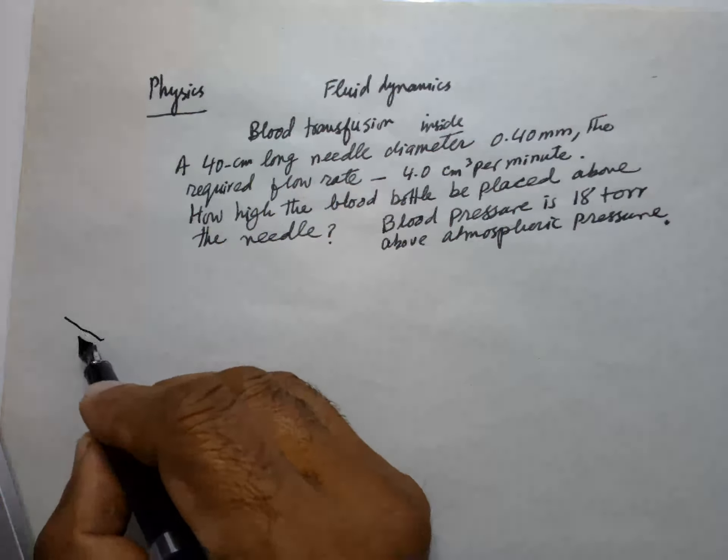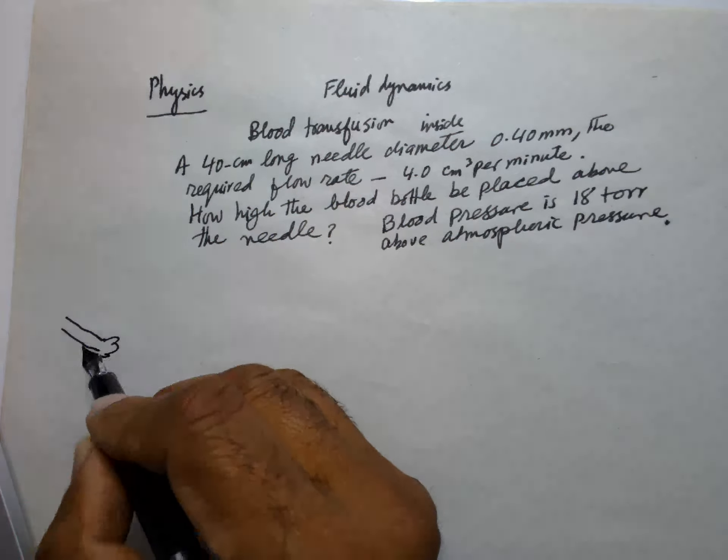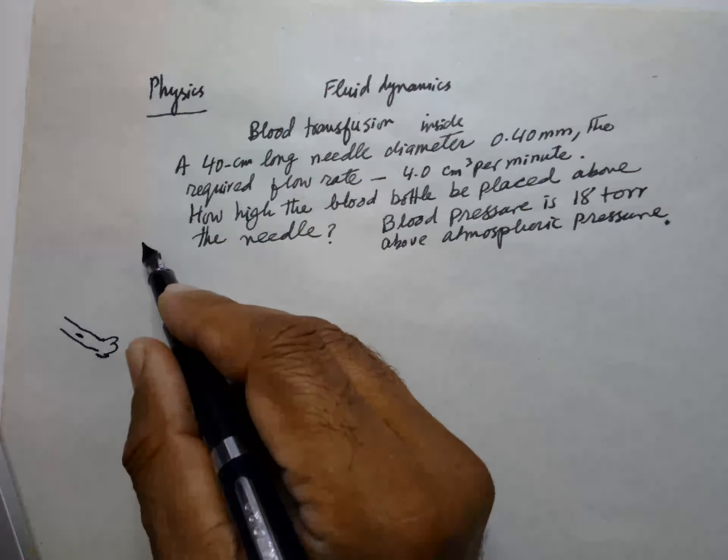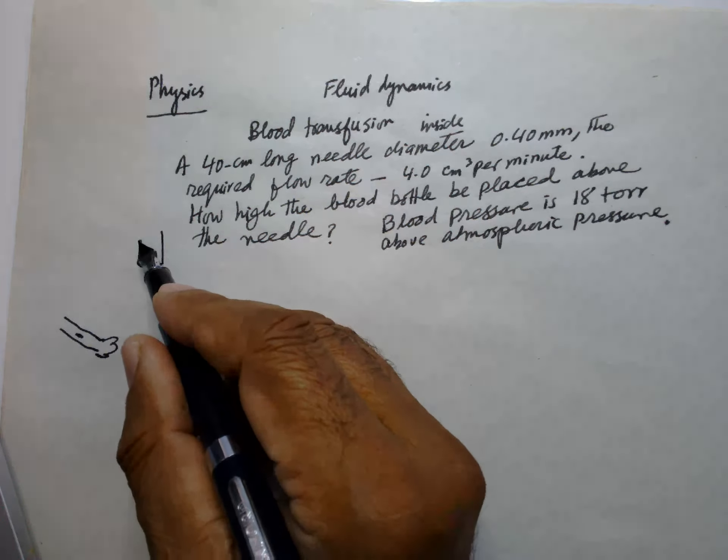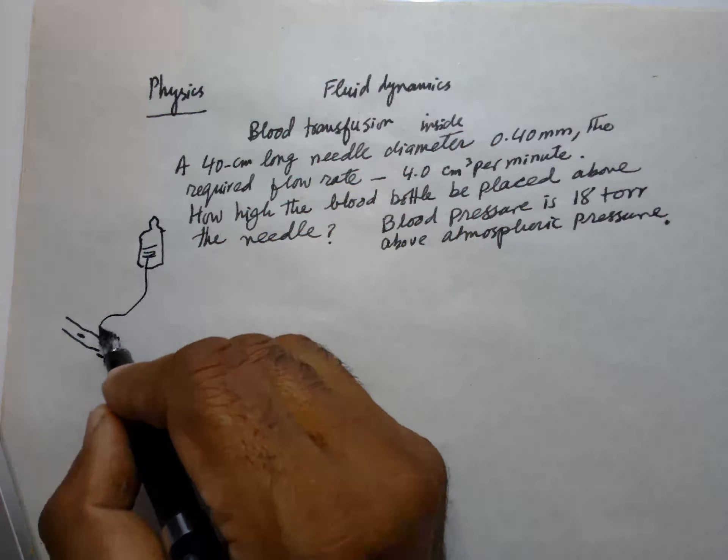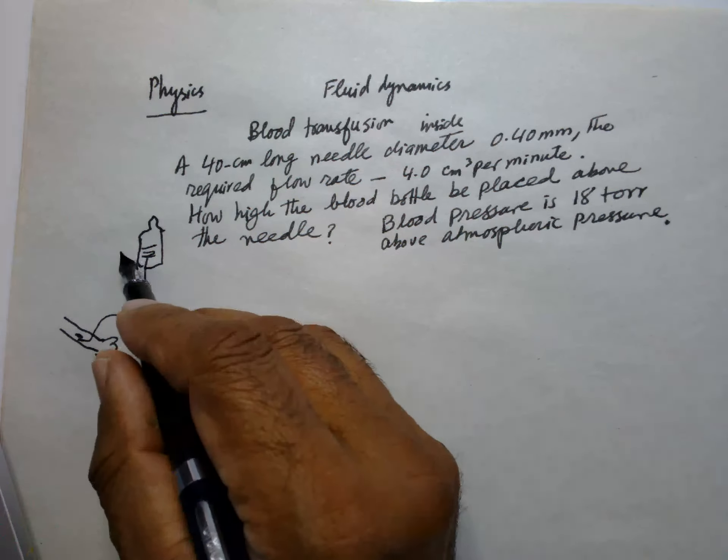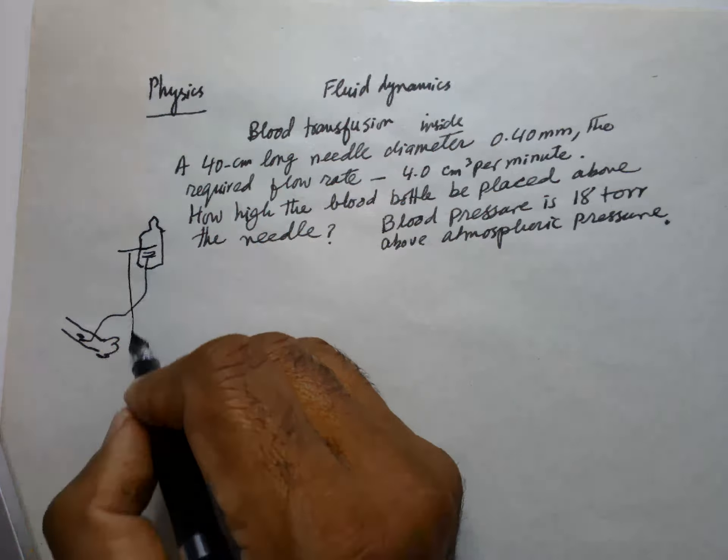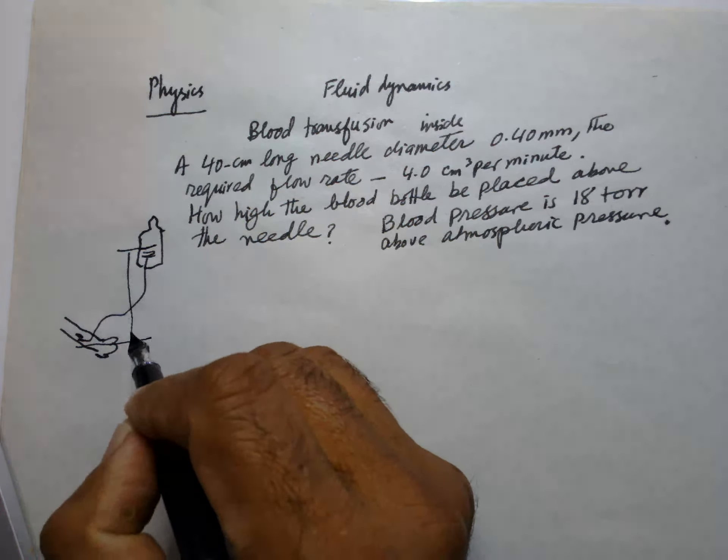So this is a person's hand and here is a needle. There's a bottle of blood and it's coming towards this one. And how high should this bottle be above the needle level?